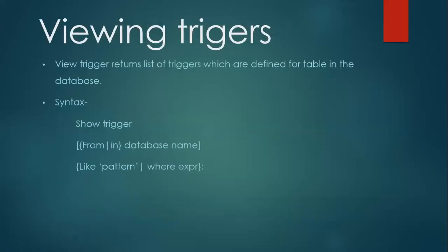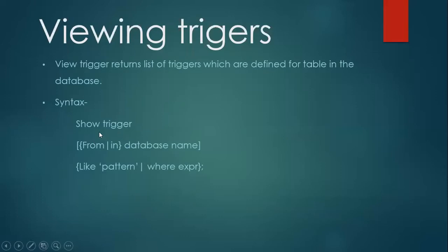The next point is viewing triggers. The SHOW TRIGGERS command returns a list of triggers defined for a table in the database. The SHOW TRIGGERS command is used with its syntax: SHOW TRIGGERS FROM or IN, followed by the database name.